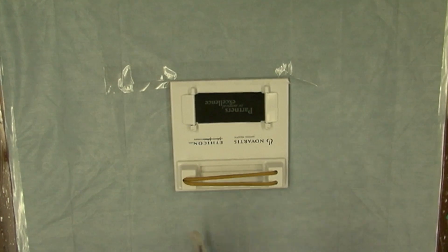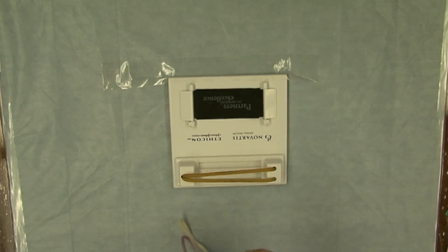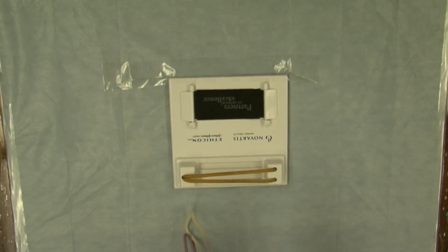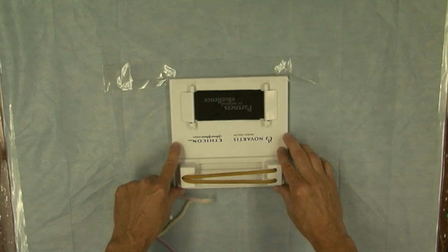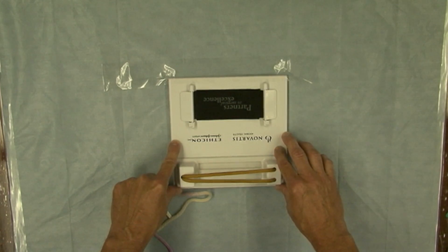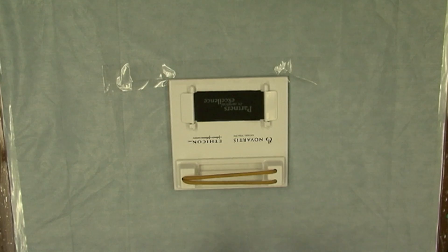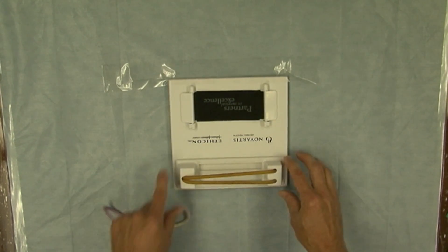I will be demonstrating the one hand technique to construct a square knot using hand ties. Notice that I have the Ethicon knot tying board actually upside down, so this portion of the knot board is toward me.